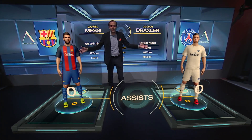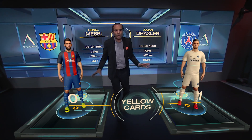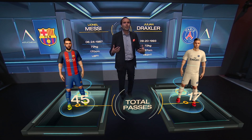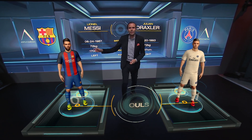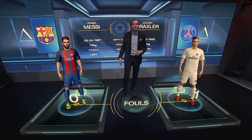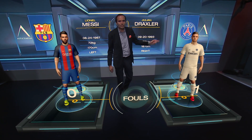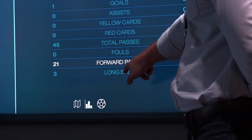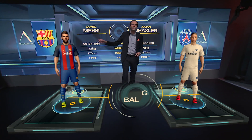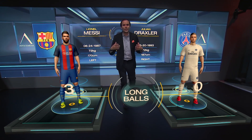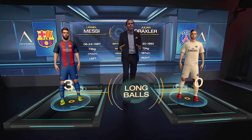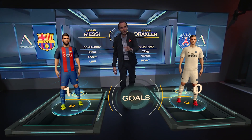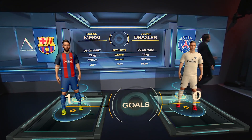So now I have myself immersed completely with augmented reality graphics on all sides. I've got the players right next to me, so I can use this to talk about how they actually progressed in the game. Messi had 45 total passes; Drexler had one foul. We go down to four passes — Messi had 21 forward passes while Drexler only had three. Messi also had three long balls. You do this for each player, putting together the whole picture that Barcelona totally dominated Paris during this game.